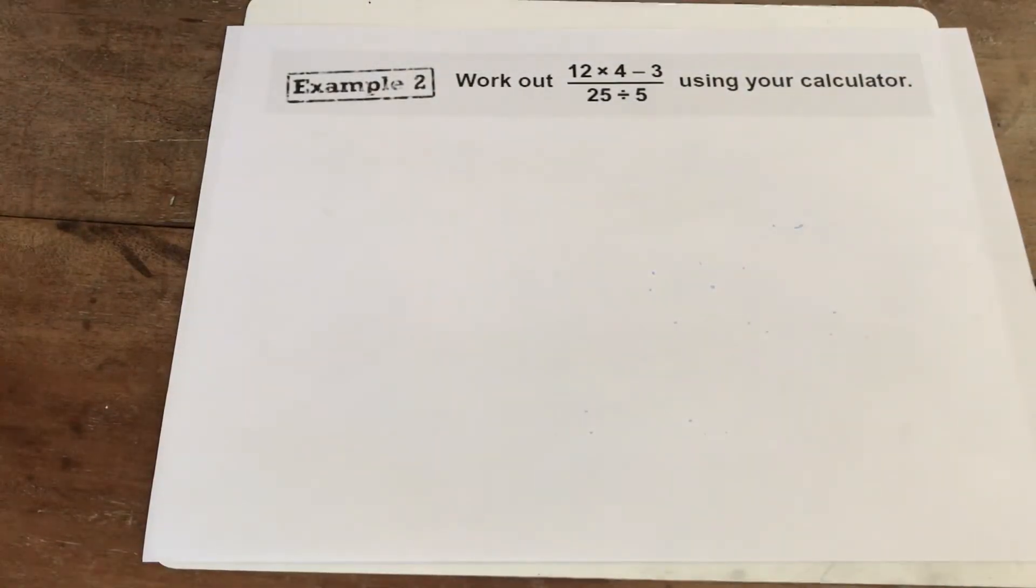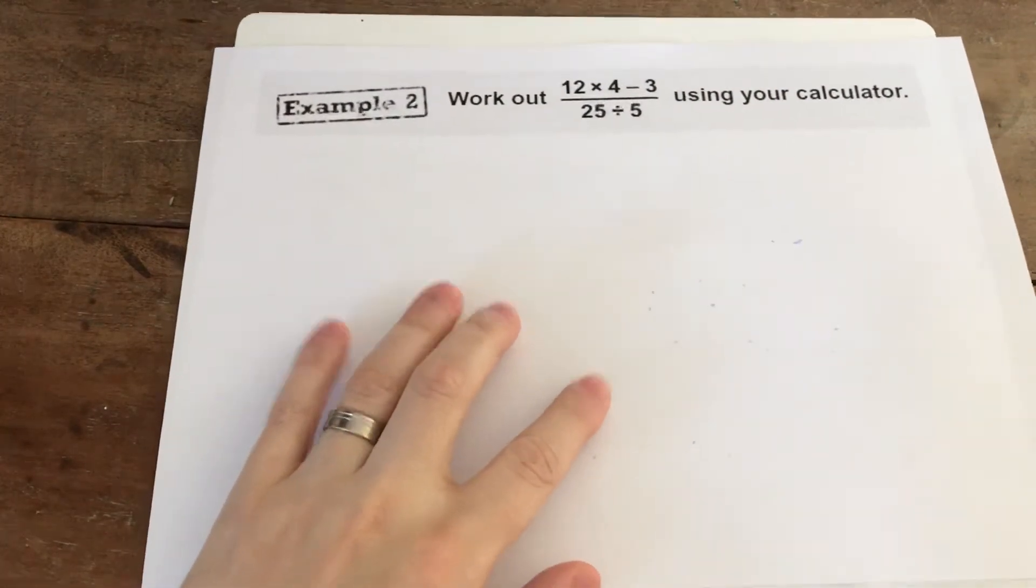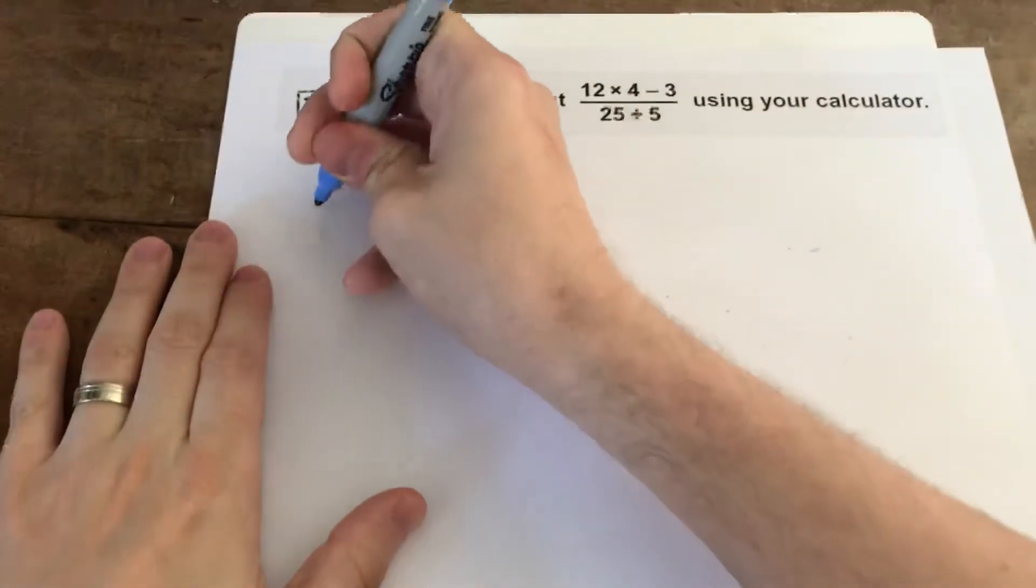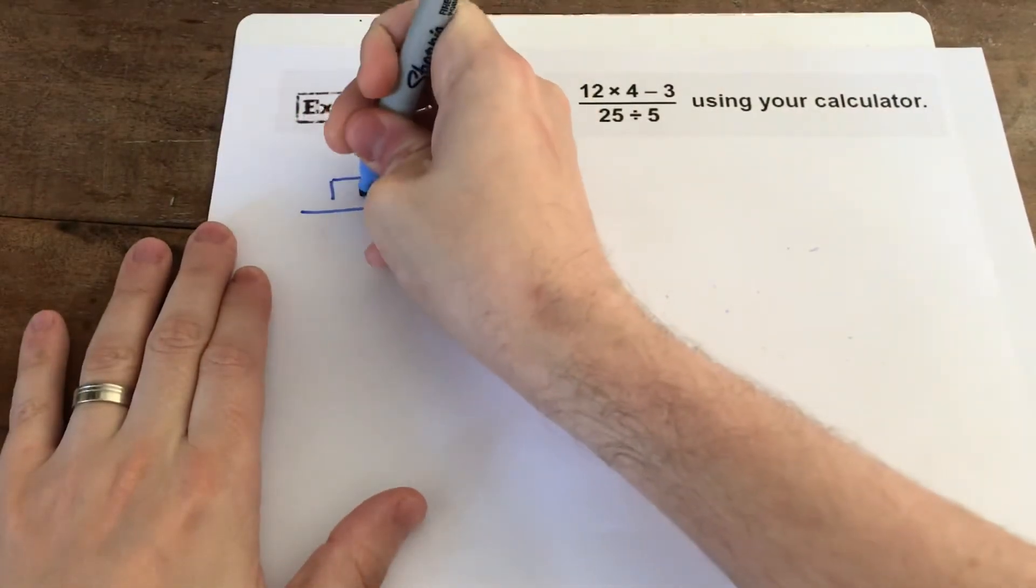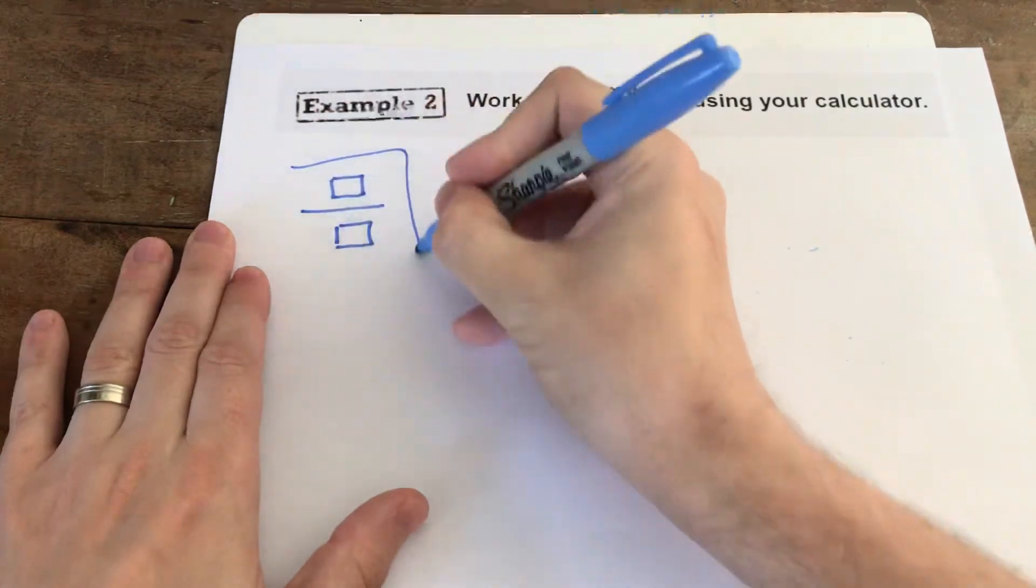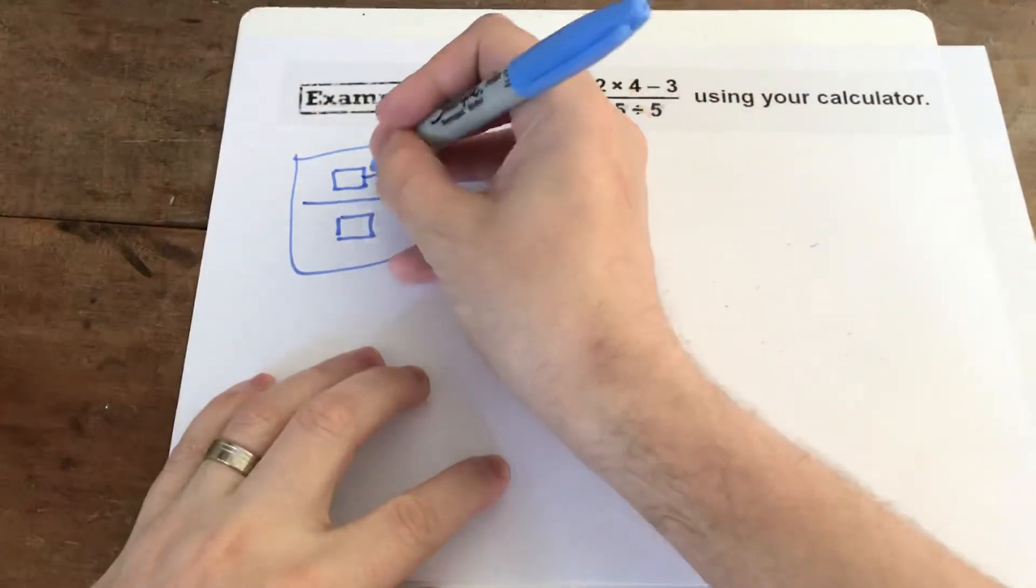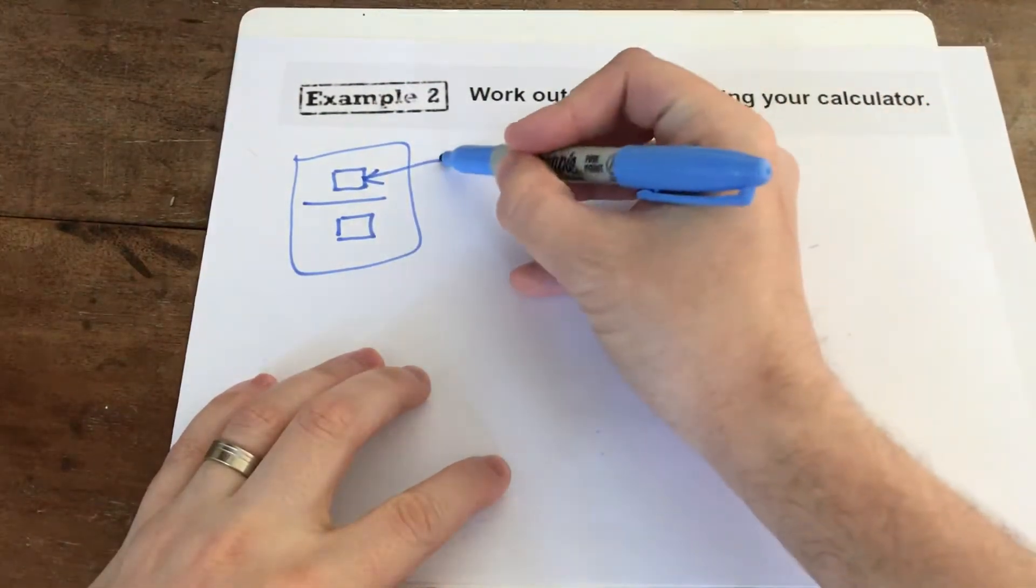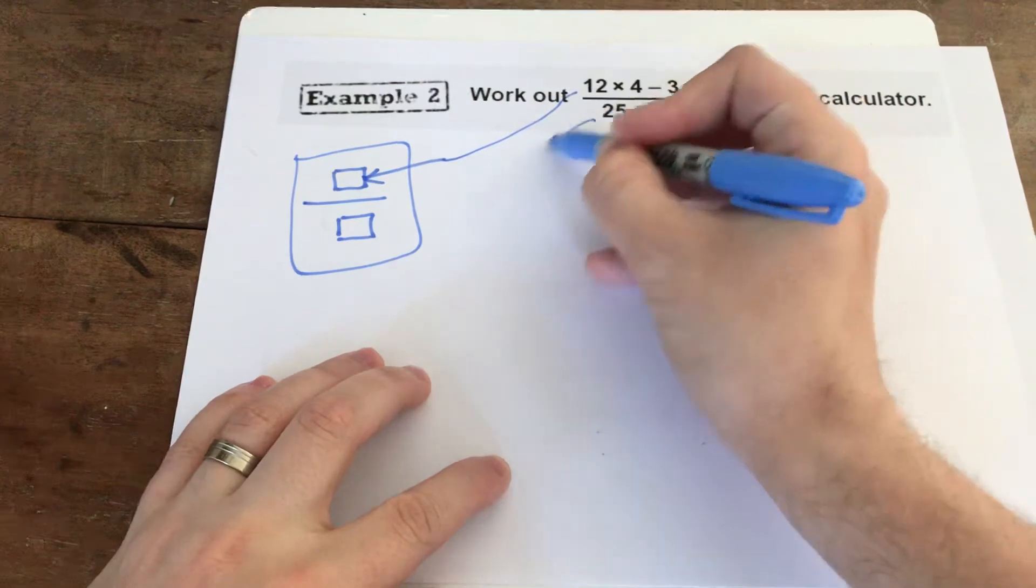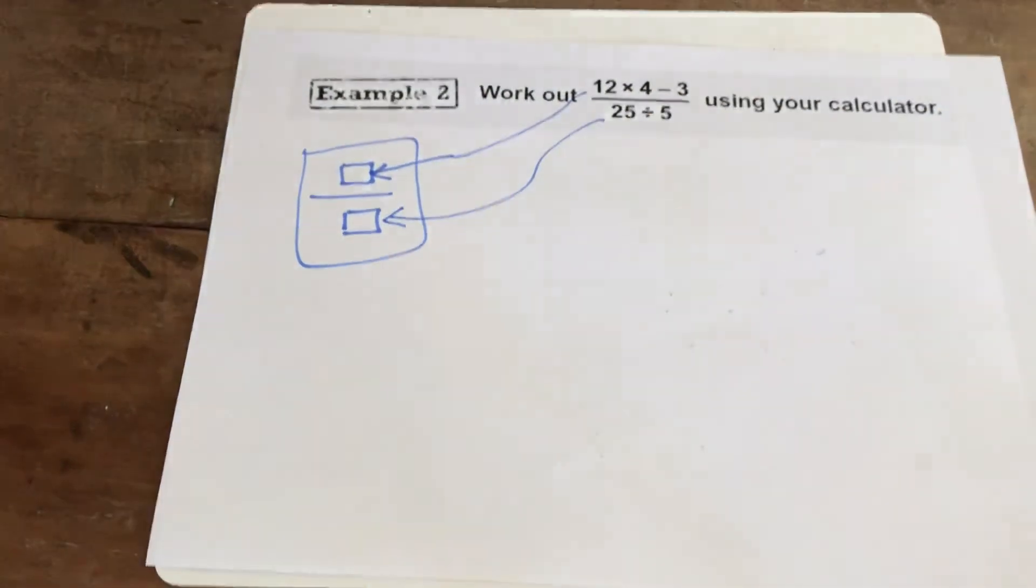The other example in this knowledge organiser asks you to use your calculator to work out a fraction. Now there is two ways of doing this. On your calculator, if you have a scientific calculator, you have a fraction button that looks like this. If you press that button, a fraction will come up. And what you would do is you would just use your arrows and you would put your top line in there and you would put your bottom line in there.